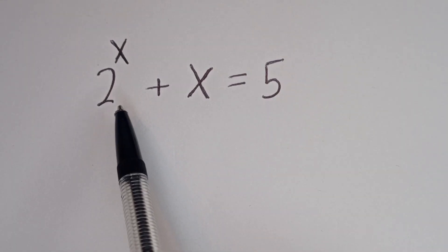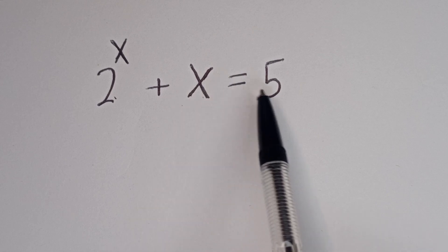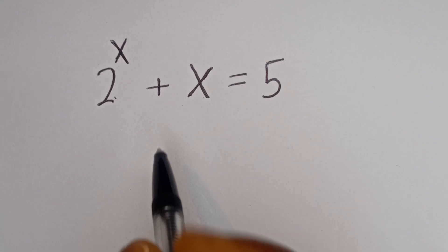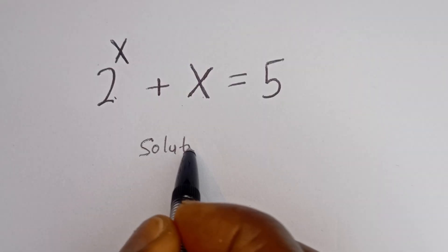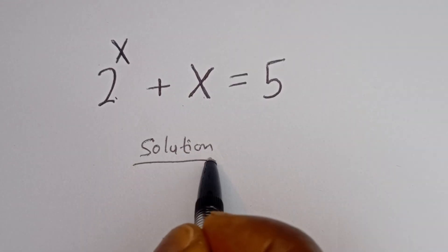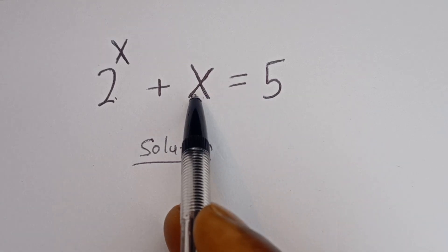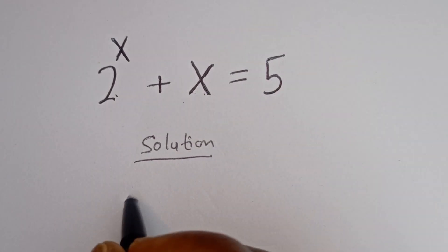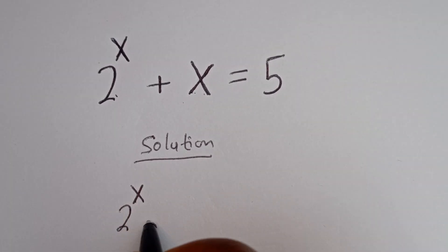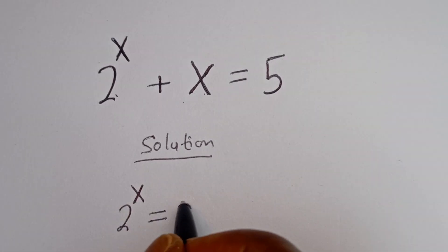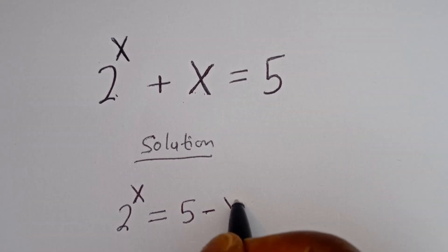Hello. How to solve for x in this equation: 2 to the power of x plus x is equal to 5. Solution. We have 2 to the power of x plus x is equal to 5. Let's take this x to the other side. We have 2 to the power of x is equal to 5 minus x.